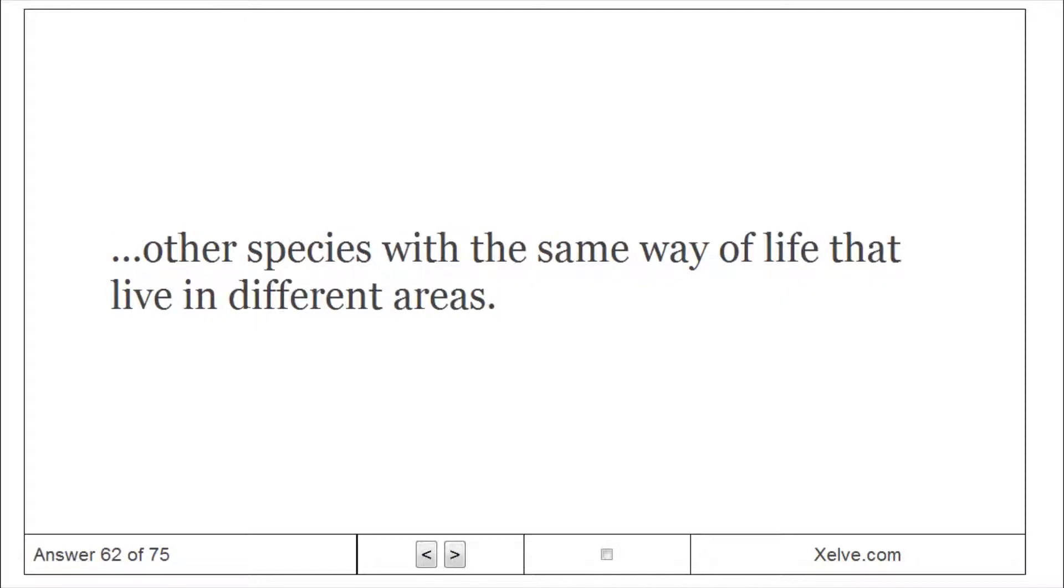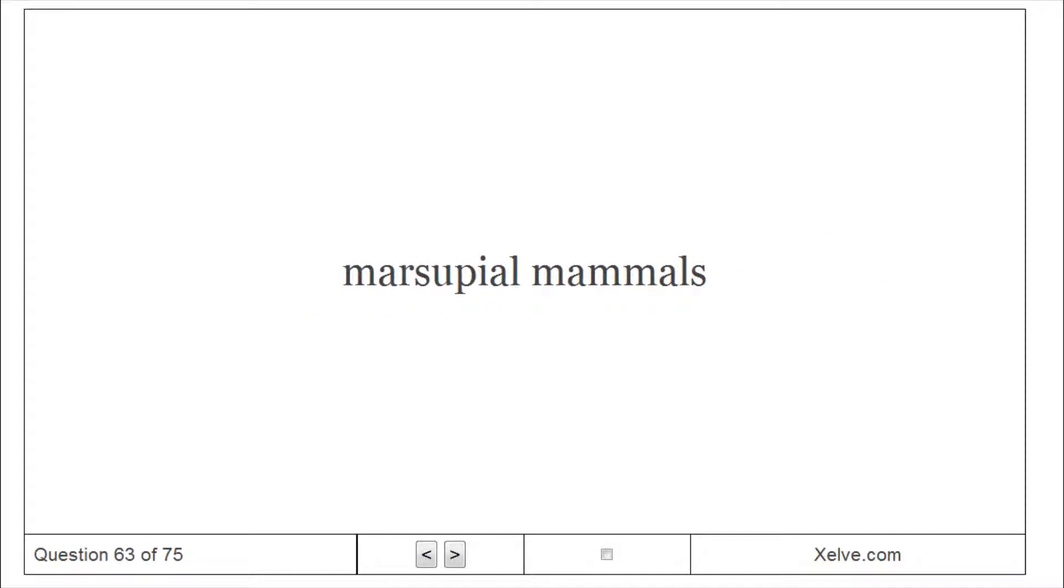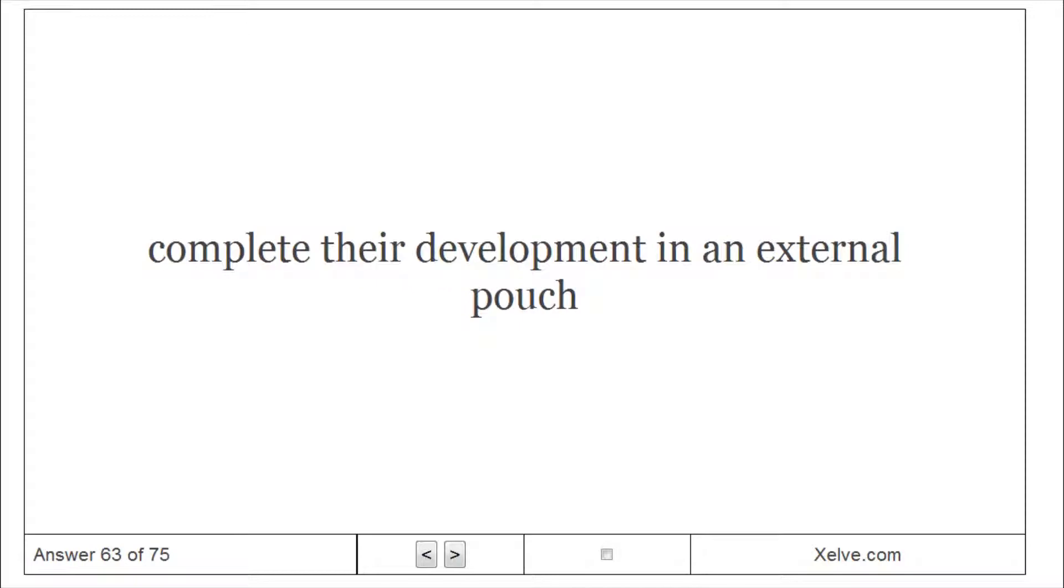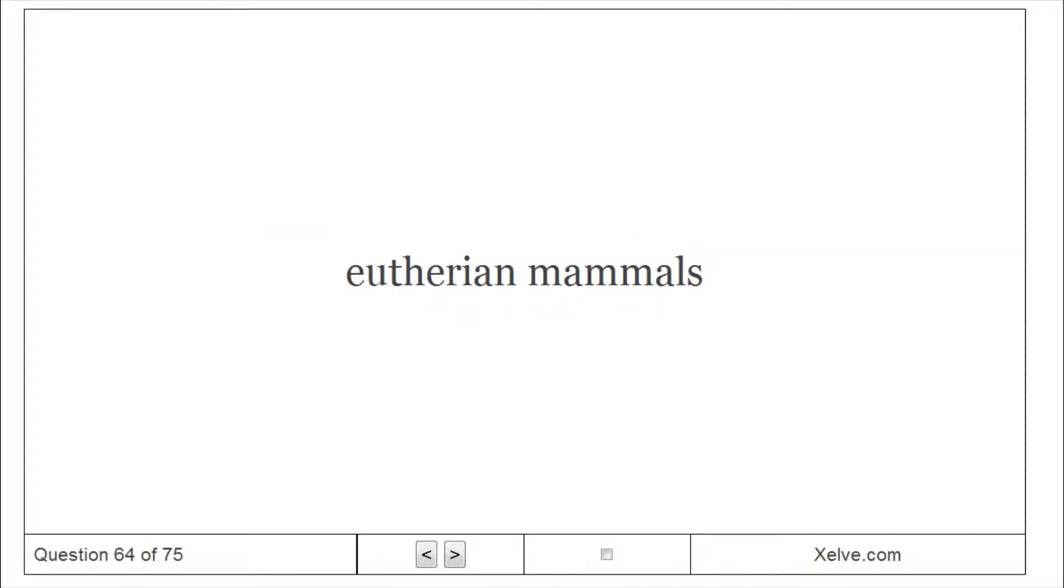Eutherian mammals: Complete their development in the uterus.